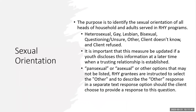One data element that's unique to RHY programs is sexual orientation, collected upon entry. The purpose is to identify the sexual orientation of all heads of household and adults served in RHY programs. It's important to note that this measure will be updated if a youth discloses the information at a later time — you can collect it through an update or interim assessment. If a youth identifies as pansexual, asexual, or any other option not listed in the dropdown box, you can select other and describe it in a separate text response within the HMIS assessment.